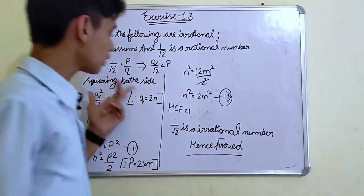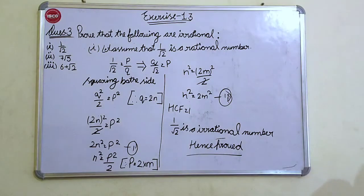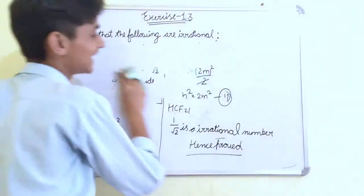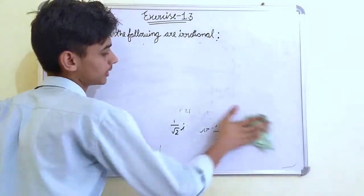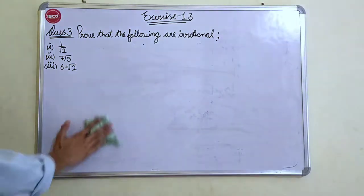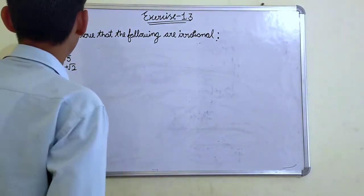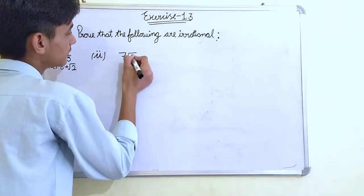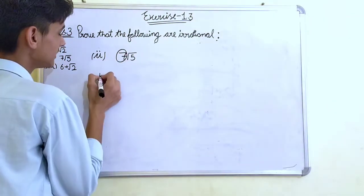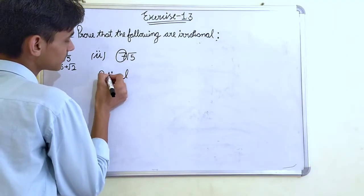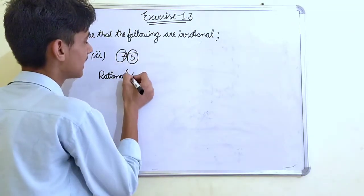That's simple guys. Let's move to the next part of question. What we have to prove that 7 under root 5 is an irrational number. 7 under root 5. We know that 7 is a rational number.